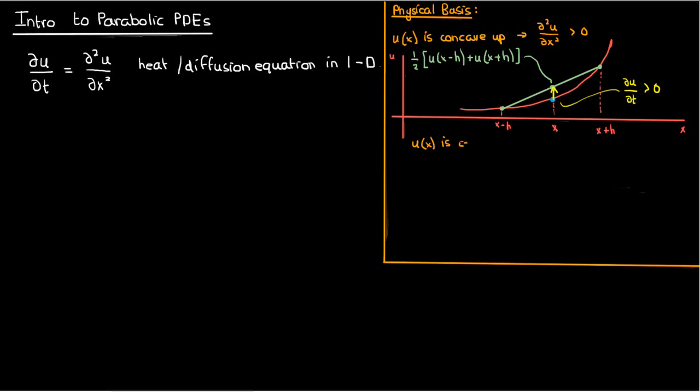On the other hand, if u is concave down, then its second derivative will be negative. It might look something like this, a function that curls downwards.